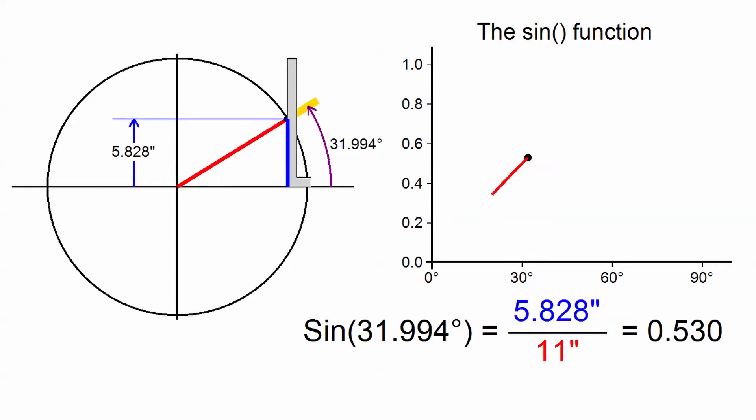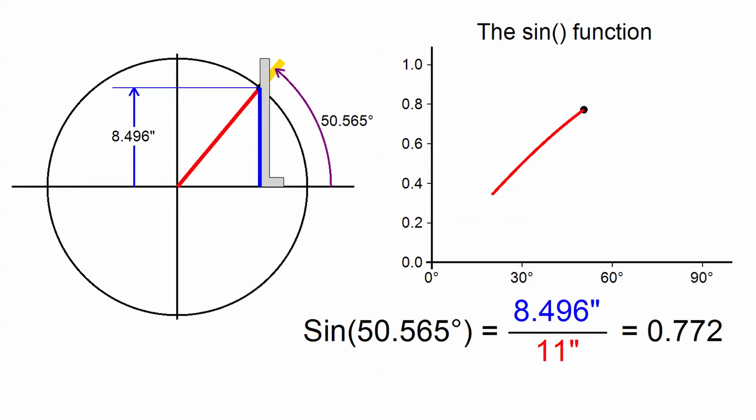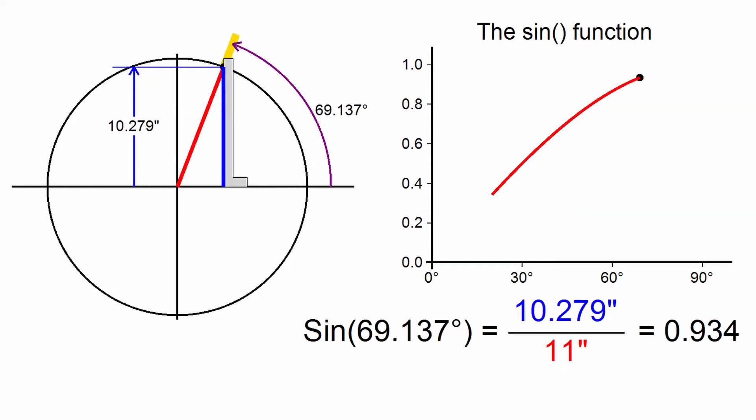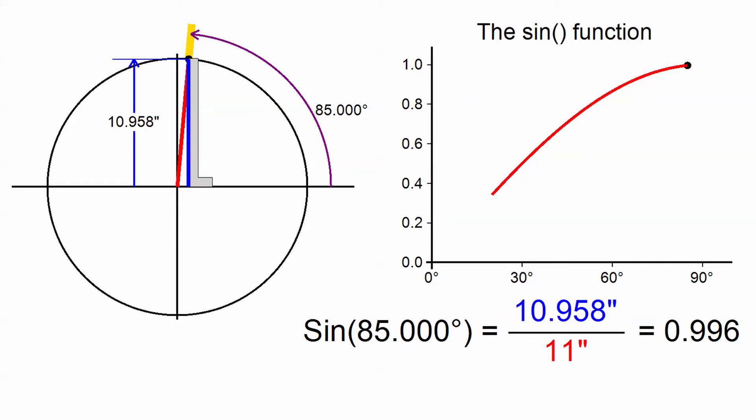I'll now increase the angle of the protractor up to 85 degrees, plotting the values of sine on the graph as we go along. As we get closer and closer to 90 degrees, the vertical distance gets closer and closer to the radius, so their division gets closer and closer to 1. In other words, the value of the sine function is going to be exactly equal to 1 as soon as we get to exactly 90 degrees.